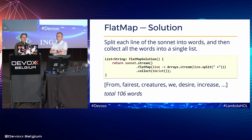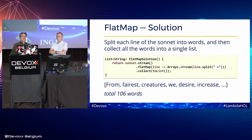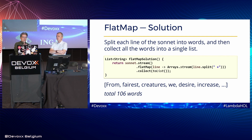Here is the solution: we stream the sonnet (a list of lines), flat map each line by splitting it with our regular expression — which gives an array of words — then wrap that array in Arrays.stream() to get a stream of words, which flat map inserts into the outer stream. We then collect into a destination list, giving us a flattened list of all words from Shakespeare's sonnet in order.